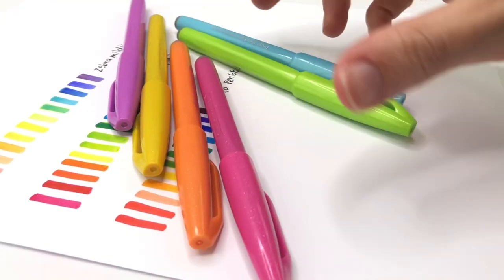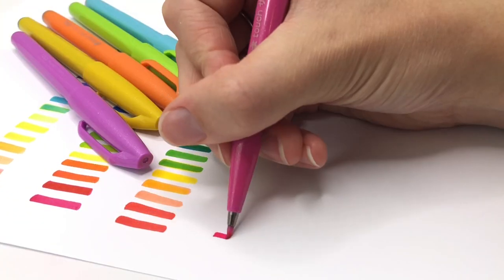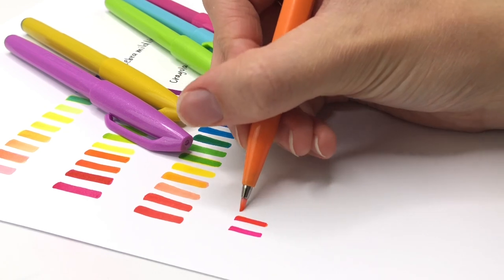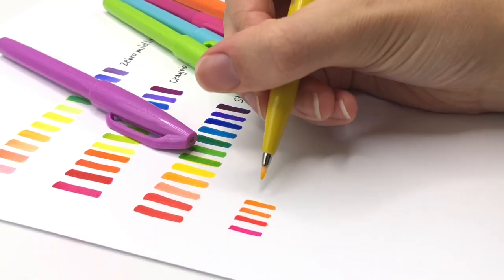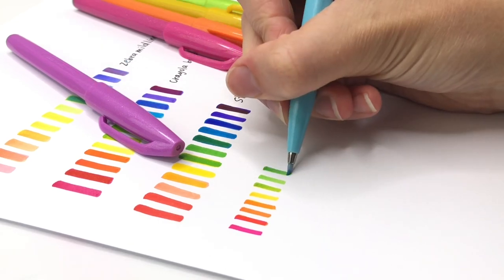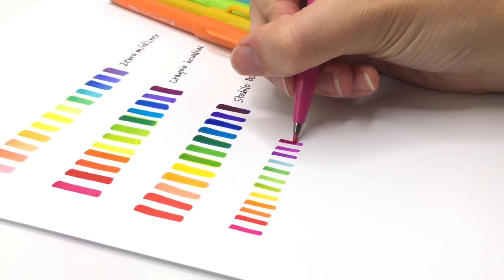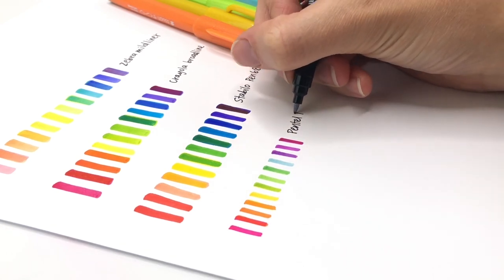So next I'm going to do my Pentel Touch brush pens. I love these pens and I was really excited that it actually does work. Once again, the yellow doesn't work on top of the orange, but the other colors all worked really well. I can definitely see myself using this method with these pens.